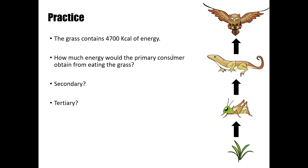If you're given a food chain where the grass contains 4,700 kilocalories of energy and asked how much energy the primary consumer would obtain: they get 10 percent of 4,700, which is 470 kilocalories. The secondary consumer — the lizard — eats the grasshopper and gets 10 percent of 470, which is 47 kilocalories. The tertiary consumer — the owl — eats the lizard and gets 10 percent of 47, which is 4.7 kilocalories.